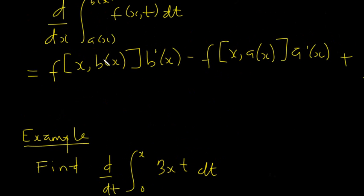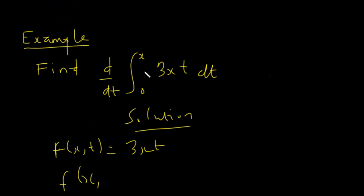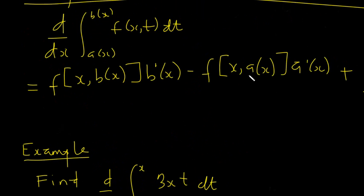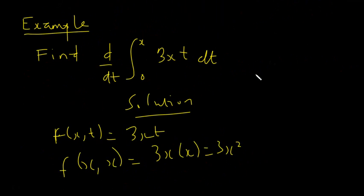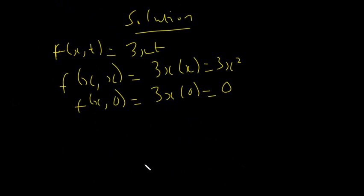We need to find F at the upper limit. The upper limit here is X, so F(X, X) = 3X · X = 3X². For the lower limit, F(X, 0) = 3X · 0 = 0.